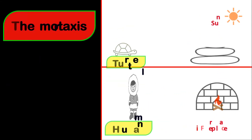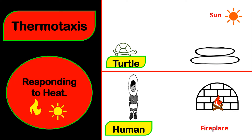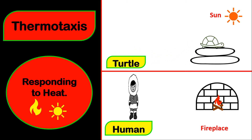Let's jump into thermotaxis. Thermo is responding to heat. Turtles, for example, will move towards where it is sunny to bask. The reason they do this is to obtain radiation or UV rays from the sun to become warm, and also to absorb vitamin D3 specifically, which helps in the development of their bones.